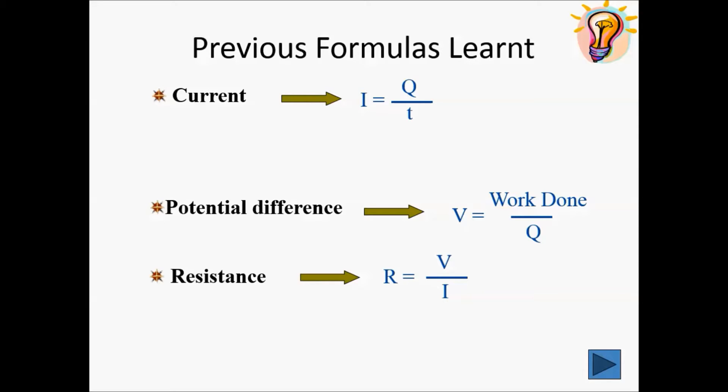The potential difference, V, is equals to work done, energy, divided by Q, charge. Resistance is equals to V, voltage, divided by I, current.